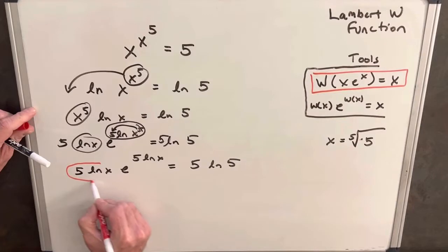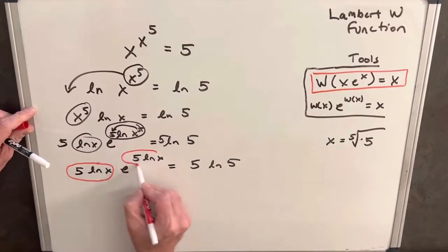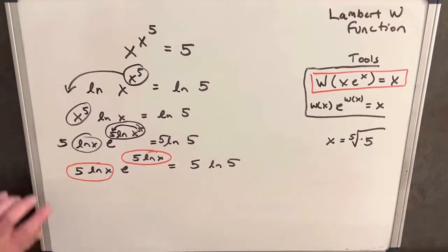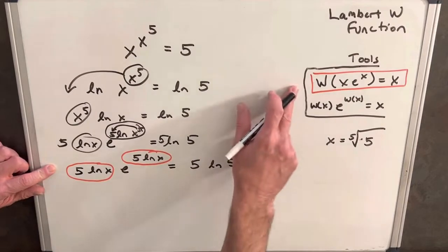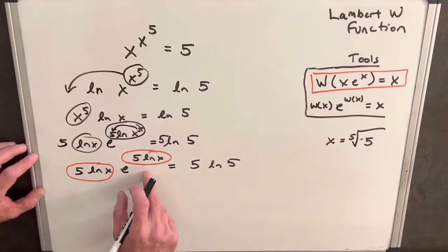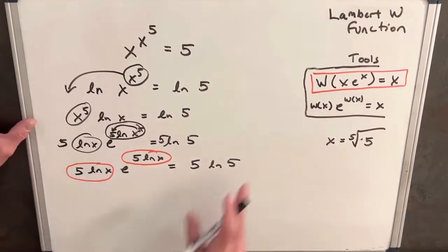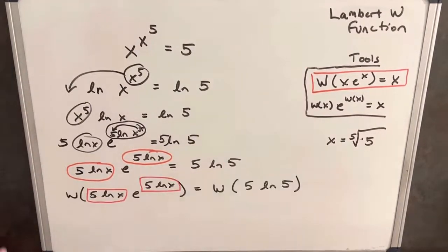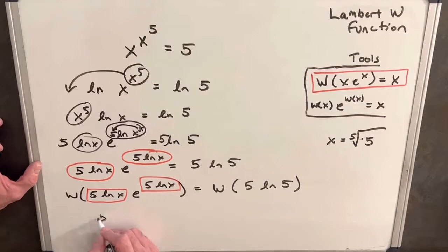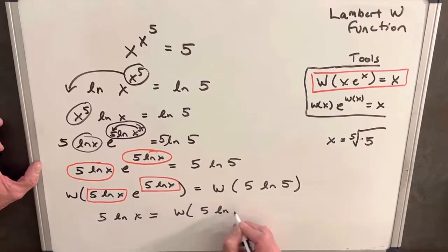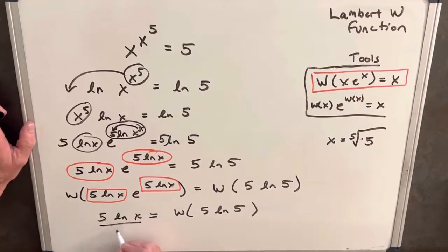Then notice the coefficient here and the exponent here are the same. So we now we have this in exactly this format that we want, with coefficient and exponent the same. So this is going to allow us to apply this Lambert W function right now. So I'm using that formula on left side, we're going to have just five ln x equals Lambert W five ln five. Then we can divide a five on both sides here. Okay, so this five is going to cancel.